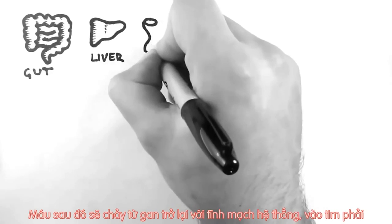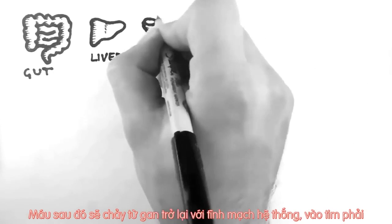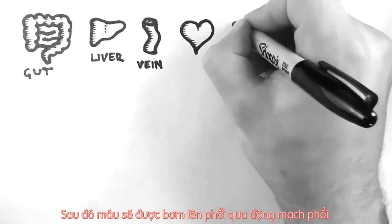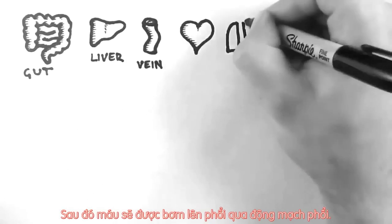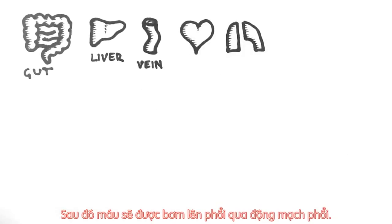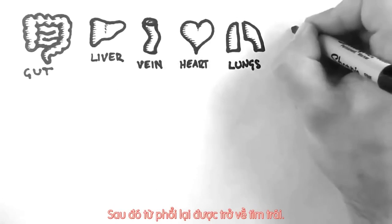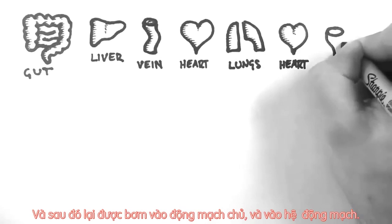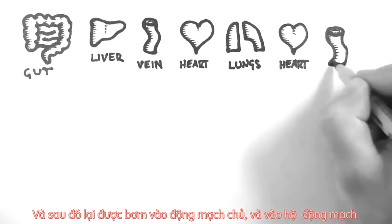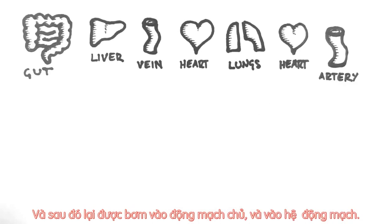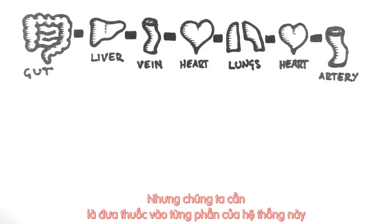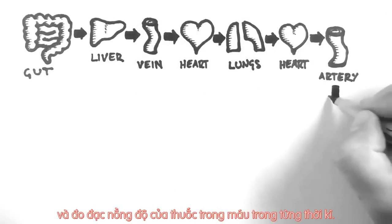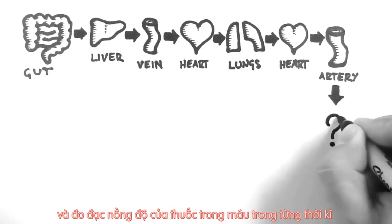Blood then flows from the liver back through the venous circulation and into the right side of the heart. The blood then flows through the pulmonary arteries to the lungs, then from the lungs back to the left side of the heart, then out into the aorta and into the arterial circulation. What we are going to do is place drugs into different parts of this system and measure their concentration in the arterial circulation over a period of time.